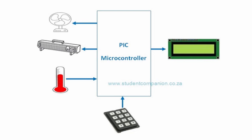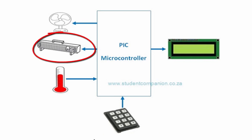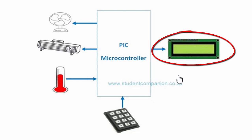The desired temperature setting is entered using a keypad. The temperature of the area is measured using an analog sensor. The microcontroller reads the temperature every 10 seconds and compares it with the desired value entered using the keypad. If the desired value is higher than the measured temperature, then the heater is switched on to warm the area. If the measured value is higher than the desired value, then the fan is switched on to cool off the area. An LCD display shows the measured temperature continuously.